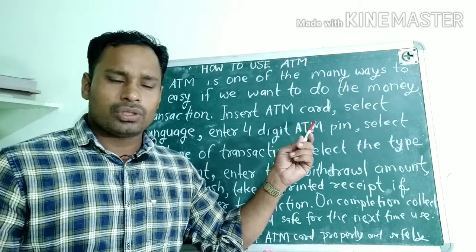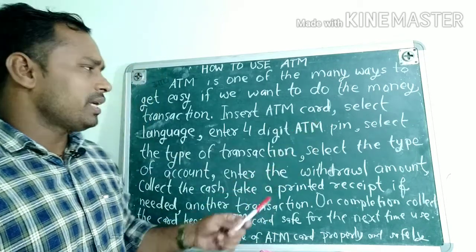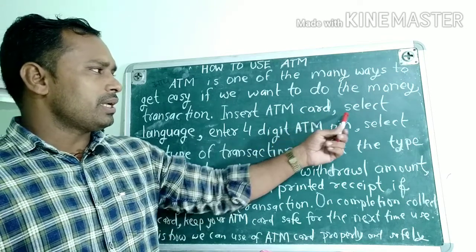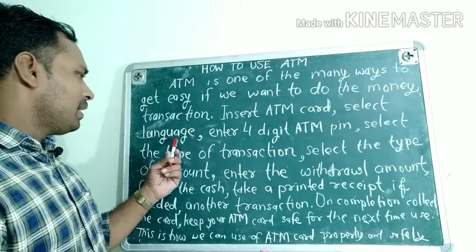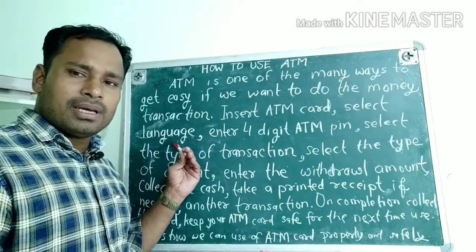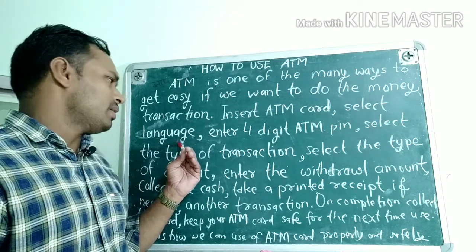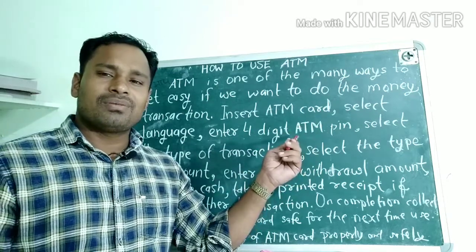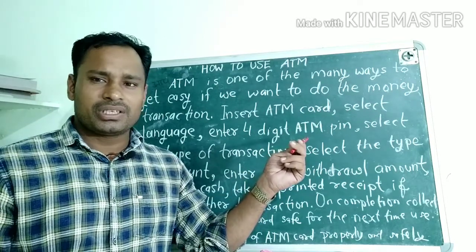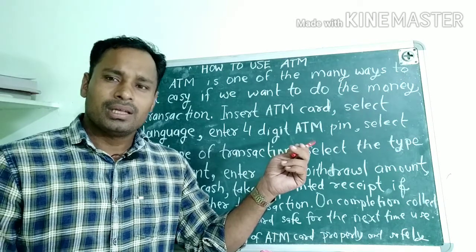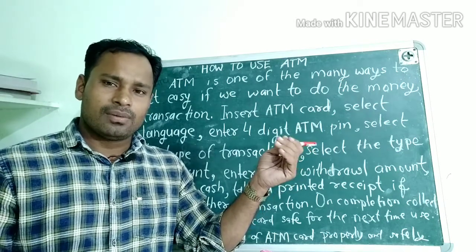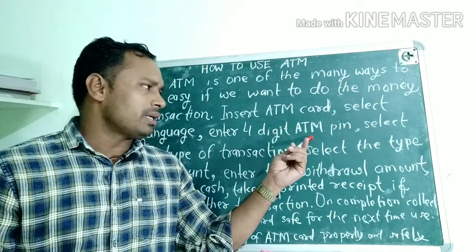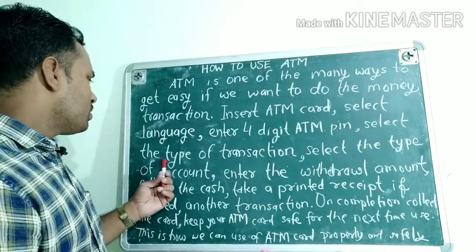Insert your ATM card into the machine. After that, you have to enter the four-digit ATM PIN code. The ATM PIN consists of four digits — 1, 2, 3, 4 — that kind of numbering. You have to enter your four-digit ATM PIN.